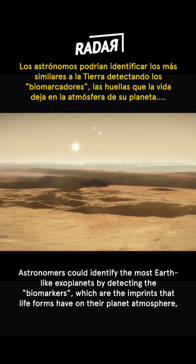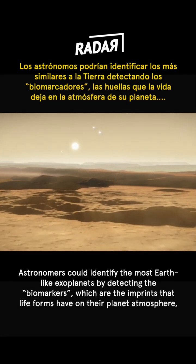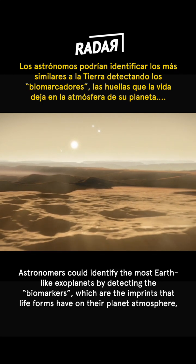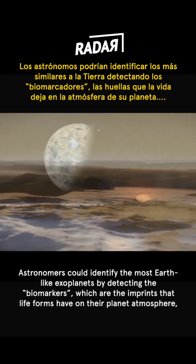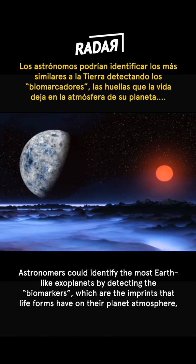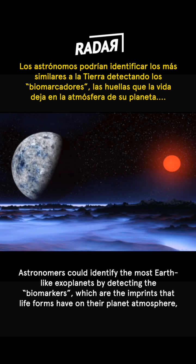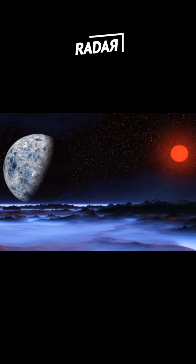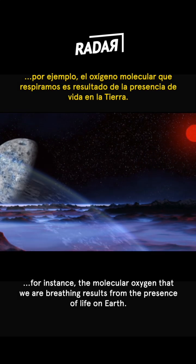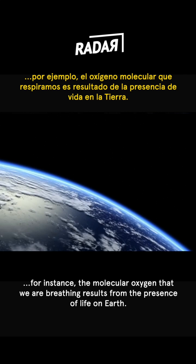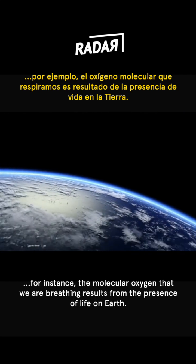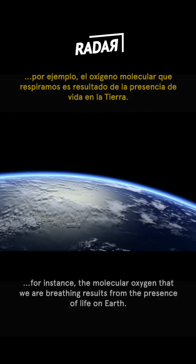Astronomers could identify the most Earth-like exoplanets by detecting the biomarkers, which are the imprints that life forms have on their host planet atmosphere. For instance, the molecular oxygen that we are breathing results from the presence of life on Earth.